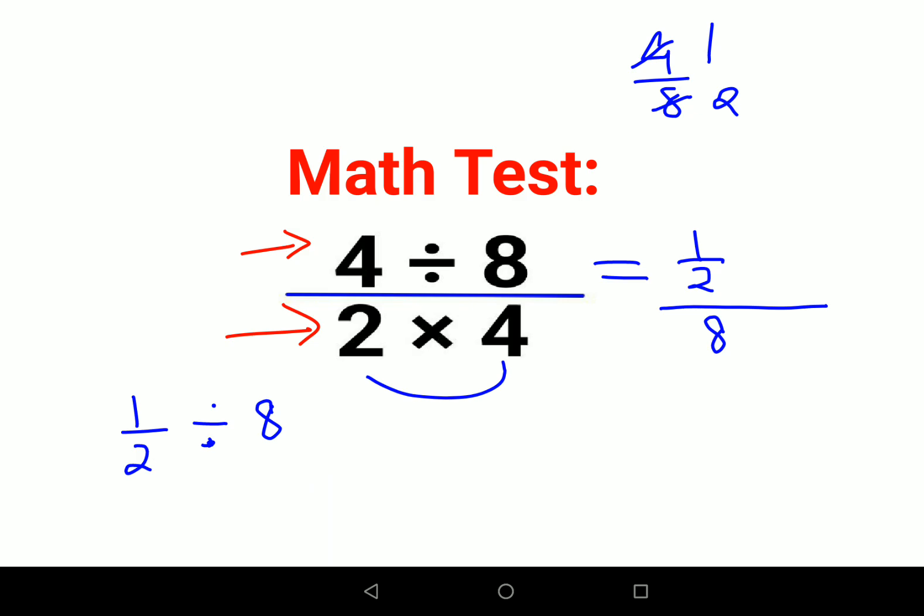Now here whenever you have a division sign between two numbers, we will follow the rule of KCF. Keeping the first number as it is means half will remain half. C stands for changing.